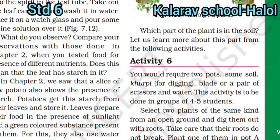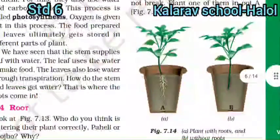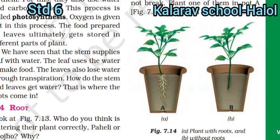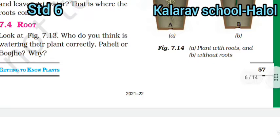Activity two: you would require two pots, some soil, a khurpi, a blade, a pair of scissors, and water. You have to plant one cutting with roots and one without roots, and observe which one grows faster.